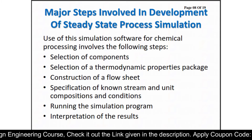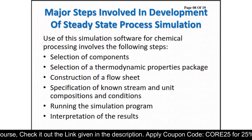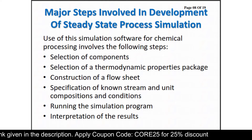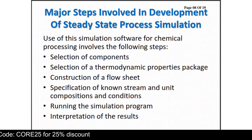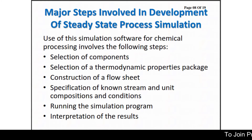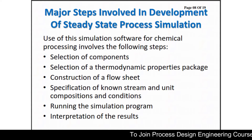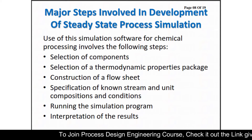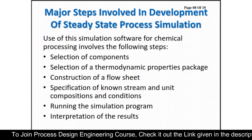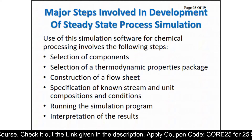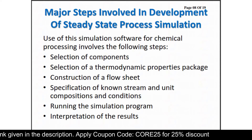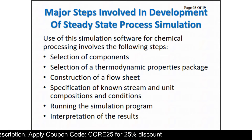Major steps involved in development of a steady state process simulation: first, you select your components — like methane, ethane, propane, or whatever you have in your system. Then you select the thermodynamic property package. Then you construct the flow sheet, specify the known stream conditions and unit compositions, then run the simulation program and interpret the results you are getting.